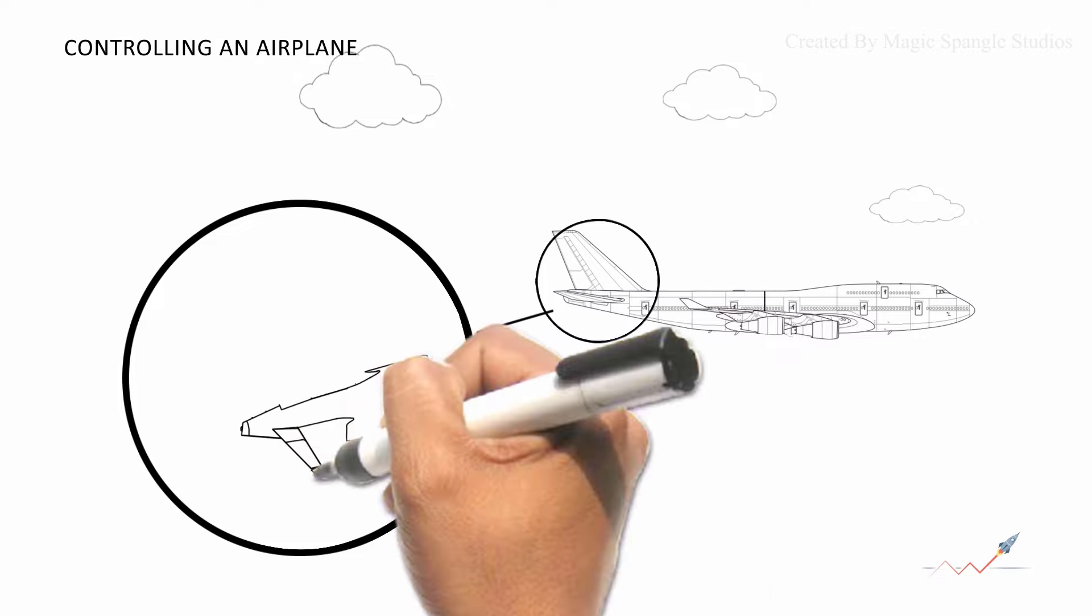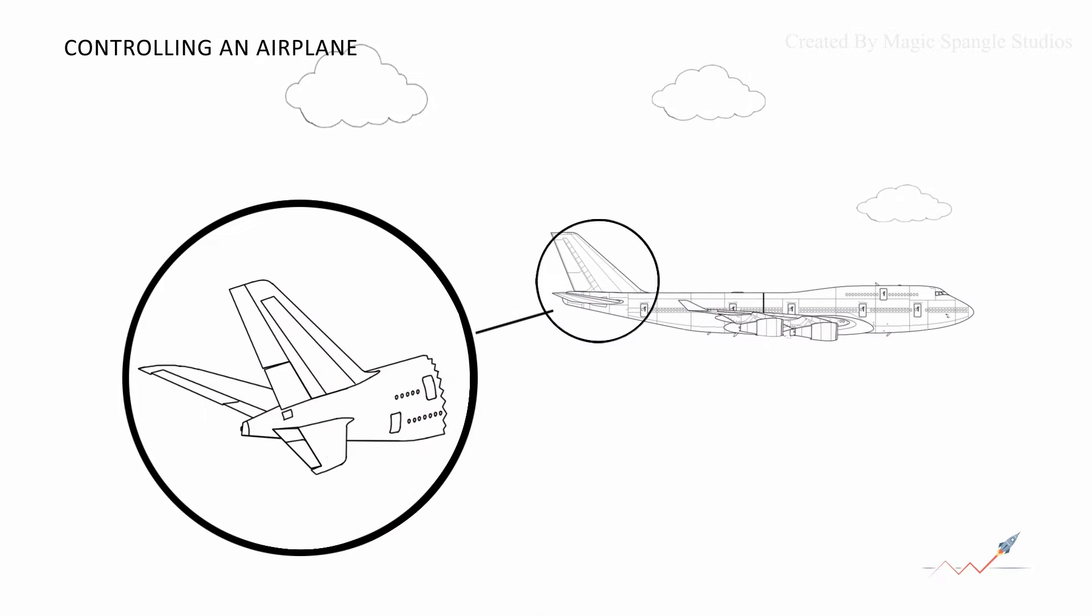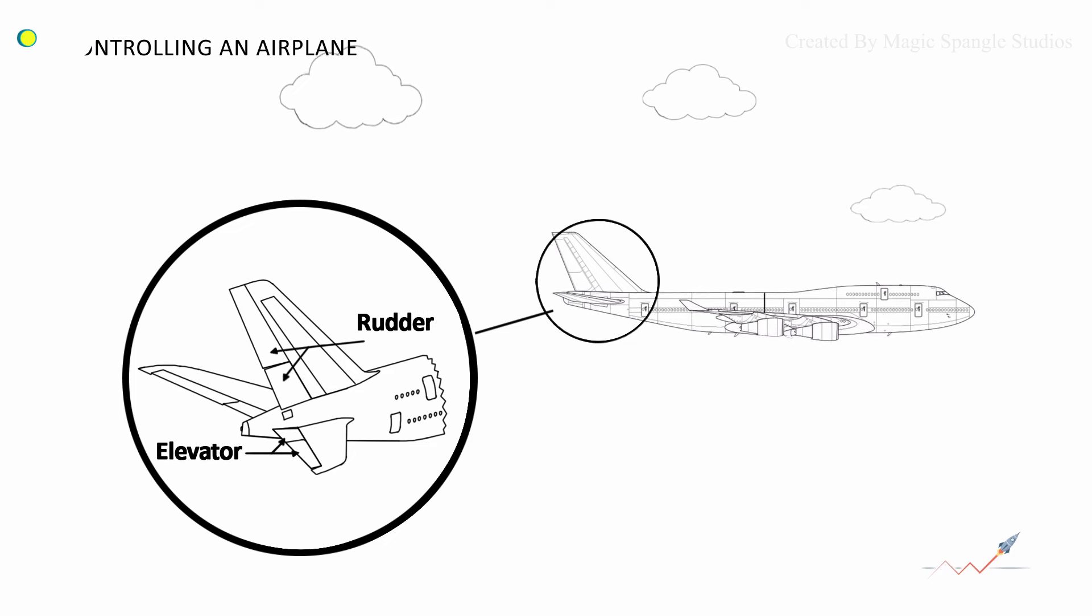Controlling the airplane. So what are the components in an airplane which control the flight, direction, and height and maintain the equilibrium? Its elevator, rudder, and aileron.